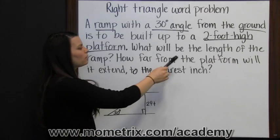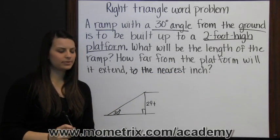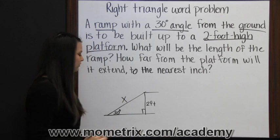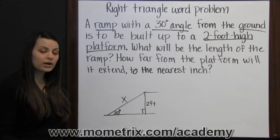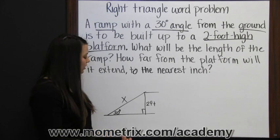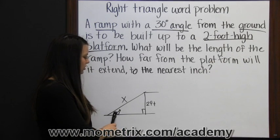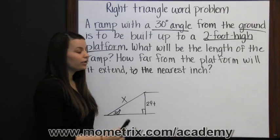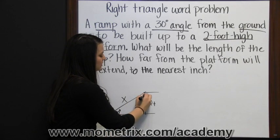The first question is, what will be the length of the ramp? So this is what we're trying to find. Well, before I start to find x, I first want to fill in what this angle is. You might already know that since we have a 30 degree angle and a 90 degree angle, this angle has to be 60 degrees.